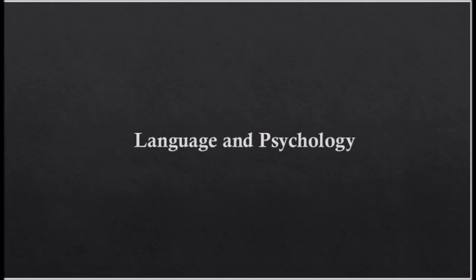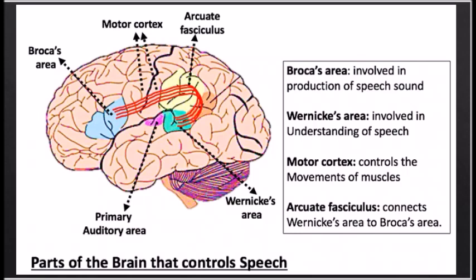Now, why are we studying language in cognitive psychology? In the next few slides, you will find the relationship between mind and language. Let's first see the physical connection between brain and language. There are different parts of our brain that control language or speech. You have previously learned about parts of the brain and their working, including aphasia — the language impairment — which we will revise here briefly.